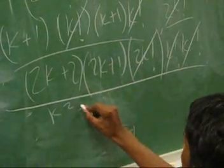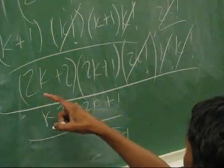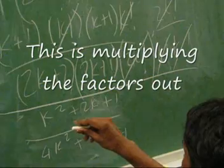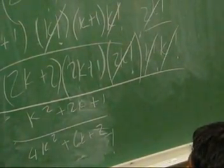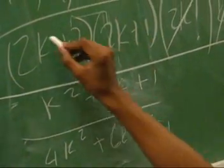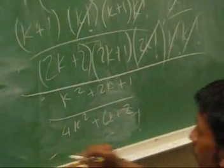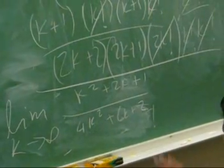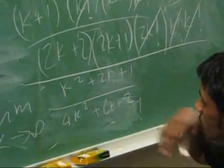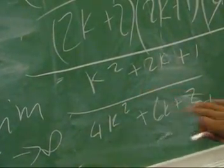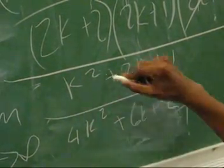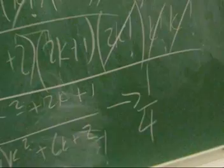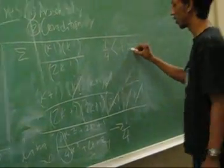Multiplying it out, you get k squared plus 2k plus 1 in the numerator over 4k squared plus 6k plus 2 in the denominator. Now take the limit as k approaches infinity. Using the rule of comparing highest powers — both are degree 2 — you take the ratio of leading coefficients. That gives 1 over 4, which is 1 fourth. Since 1 fourth is less than 1, by the Ratio Test, this converges.